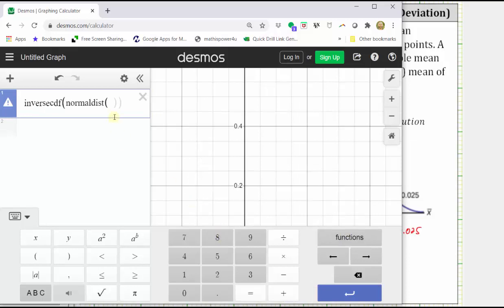For the standard normal distribution, the mean is zero, comma. Standard deviation is one. Right arrow, comma. The area to the left is 0.975, enter. And we get the same result, approximately 1.96.